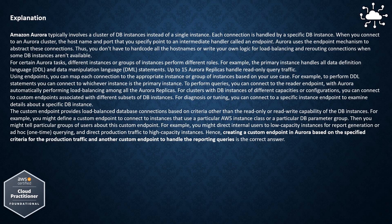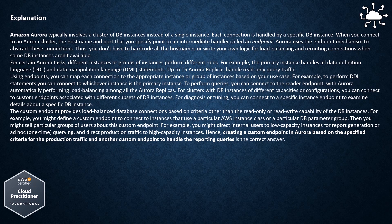Amazon Aurora typically involves a cluster of DB instances. Each connection is handled by a specific DB instance. When you connect to an Aurora cluster, the hostname and port point to an intermediate handler called an endpoint. Aurora uses the endpoint mechanism to abstract these connections so you don't have to hardcode hostnames or write your own load balancing logic. For certain Aurora tasks, different instances or groups perform different roles. The primary instance handles all DDL and DML statements, while up to 15 Aurora replicas handle read-only query traffic.